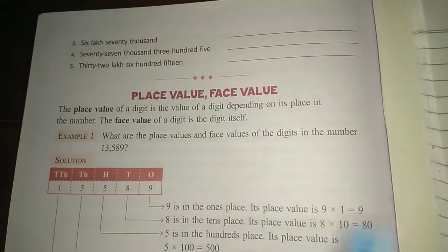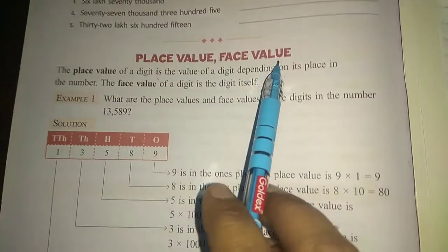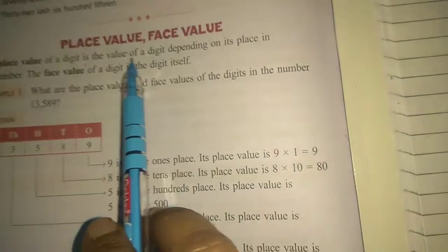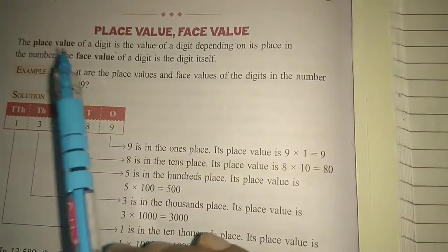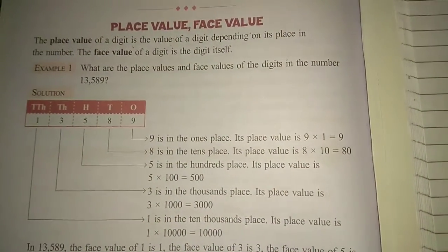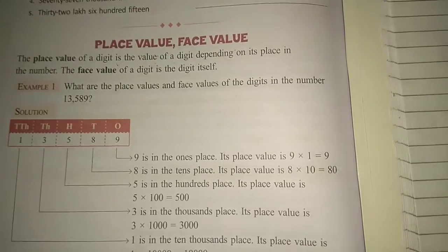Good morning students. Today's topic is place value and face value. What is place value? The place value of a digit is the value of a digit depending on its place in the number. Place value means the number where your position is.